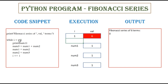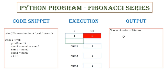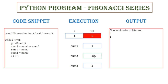While 1 less than 6 — yes, that is true. So print num1, the value of num1 is 1, so 1 gets printed on the output window. Num3 equals num1 plus num2, so 1 plus 1, it gets updated to 2. Num1 equals num2, the value of num2 is 1, which will be updated to num1. Num2 equals num3, the value of num3 is 2, which will get updated to num2. So num2 also becomes 2. i plus equals 1, so now the value of i becomes 2.